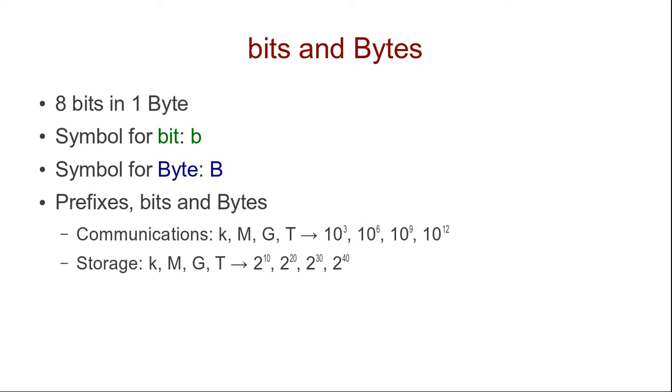That is, if we have 1 kilobyte, what does k mean? Well, if k is 10 to the power of 3, then that is 1 by 10 to the power of 3 bytes, which is 1,000 bytes. Which is the common meaning of k when we talk about communication systems.